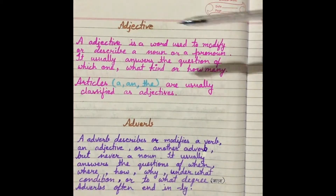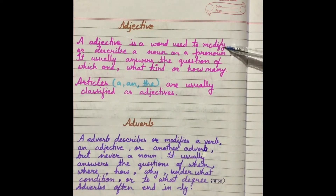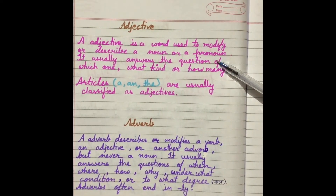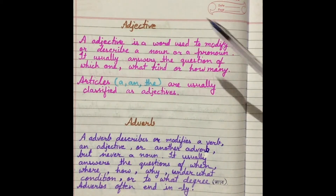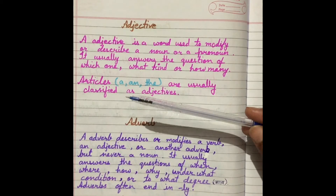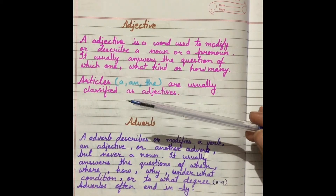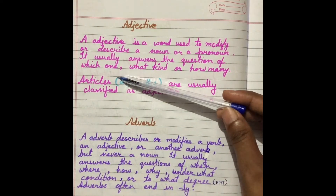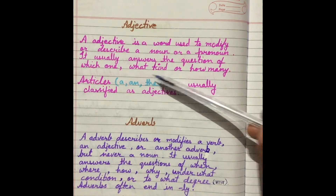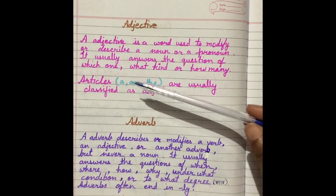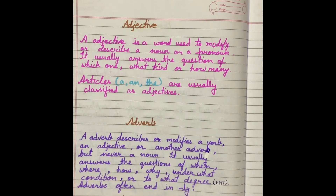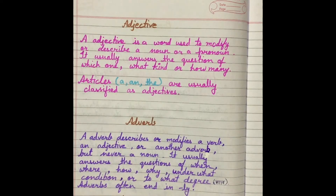Next is adjective. An adjective is a word used to modify or describe a noun or pronoun. Adjective jo hote hain woh noun or pronoun ko modify karte hain, describe karte hain — noun or pronoun ke baare mein bataate hain. It usually answers the questions: which one, what kind, and how many — jo answer aaye ga woh adjective hoga. Articles 'a', 'an', and 'the' are usually classified as adjectives — unhe bhi adjective ki category mein hi rakha jaata hai.